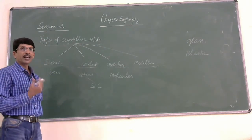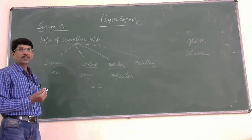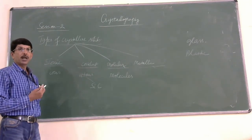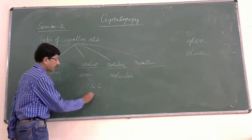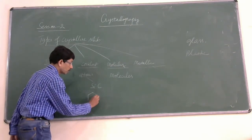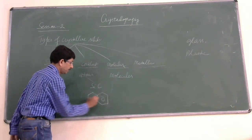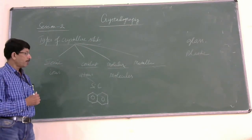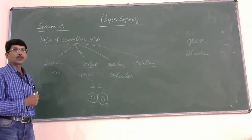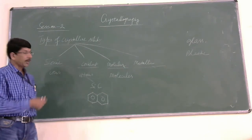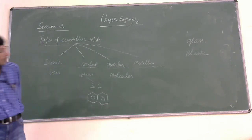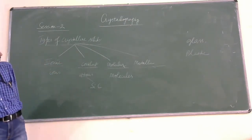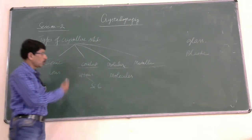Similarly, if you take an organic compound — for example, naphthalene, which is a solid — it is also an example of a covalent compound. Naphthalene is made up of carbon and hydrogen, and the carbon and hydrogen atoms are linked through covalent bonds. So you name any organic compound — there are examples of covalent crystals, covalent solids.